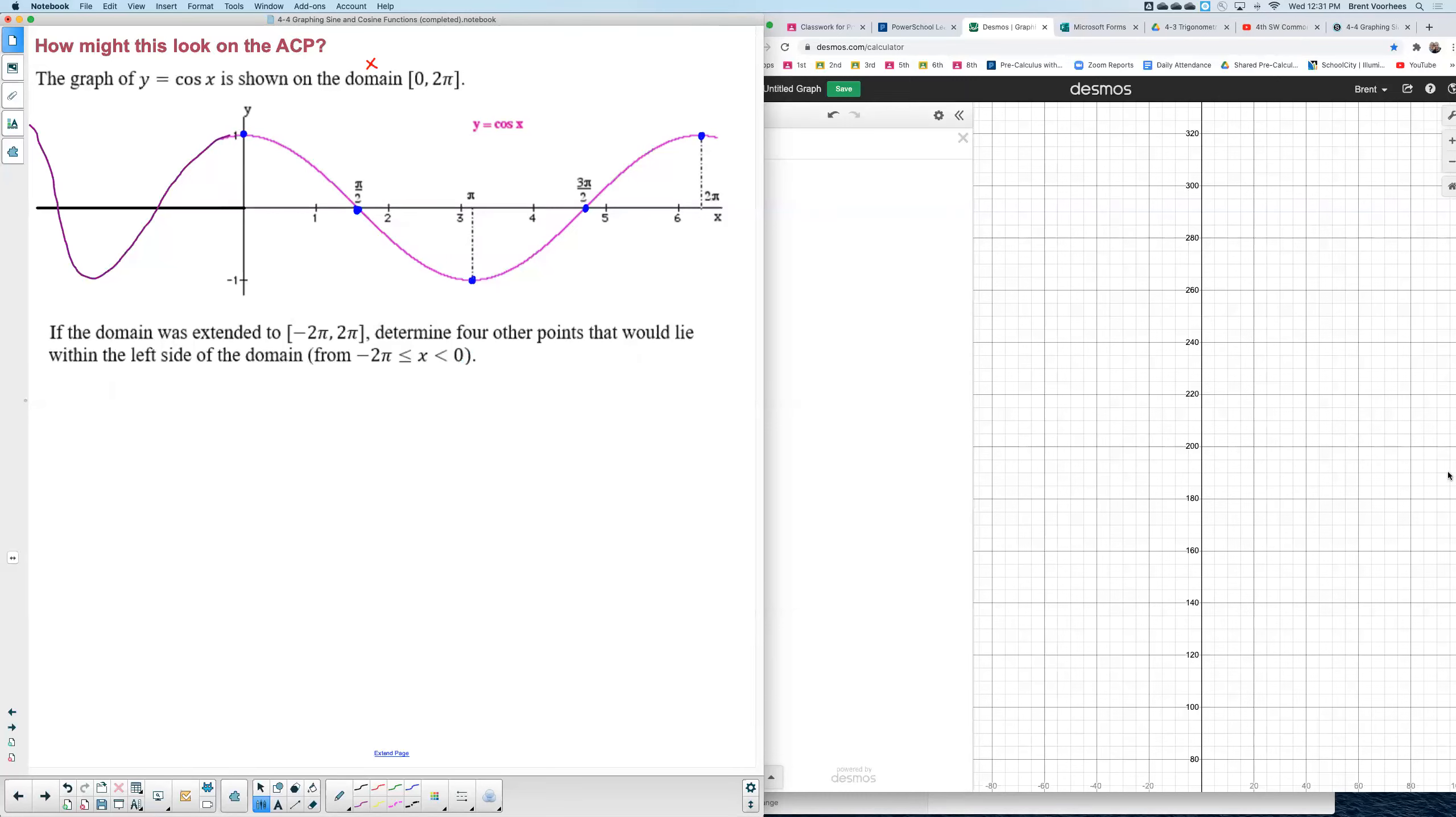And so the four points that I would use would be this one, this one, this one, and then the peak over here which I don't really have the graph to add on.